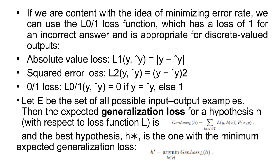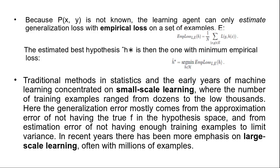Because probability P(x, y) is not known, the learning agent can only estimate generalization loss with empirical loss on a set of examples. The empirical loss L_E(h) equals 1/n summation L(y, h(x)), where (x, y) belongs to E. And the estimated best hypothesis ĥ* is then one with minimum empirical loss: ĥ* equals argmin EmpiricalLoss_E(h), h belongs to H.